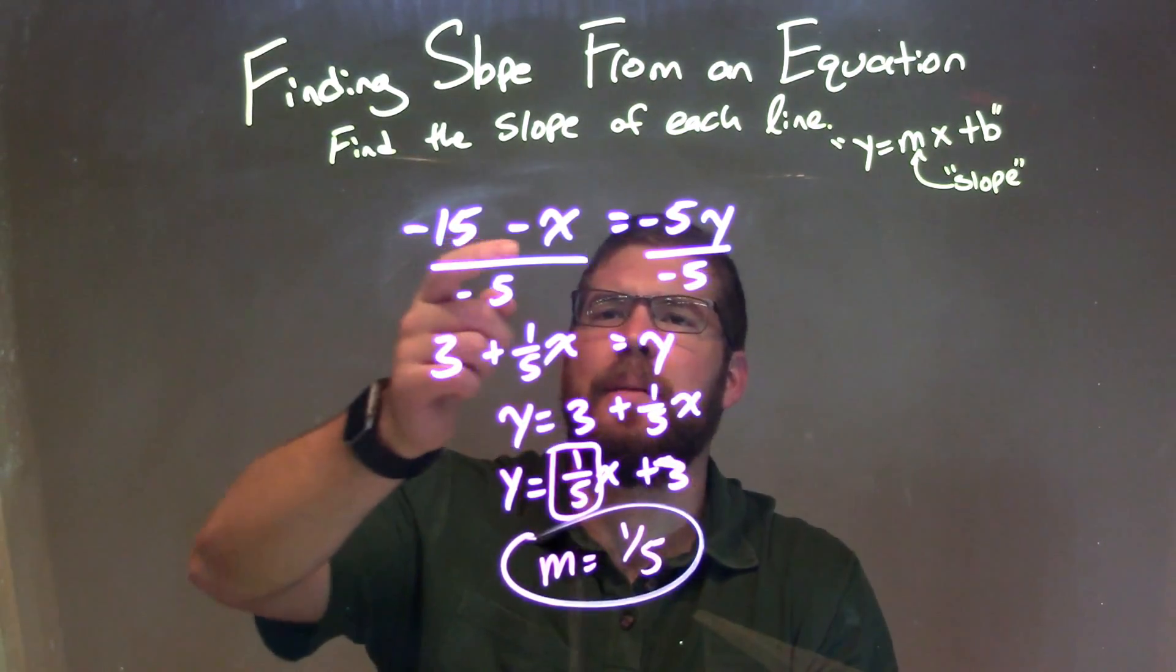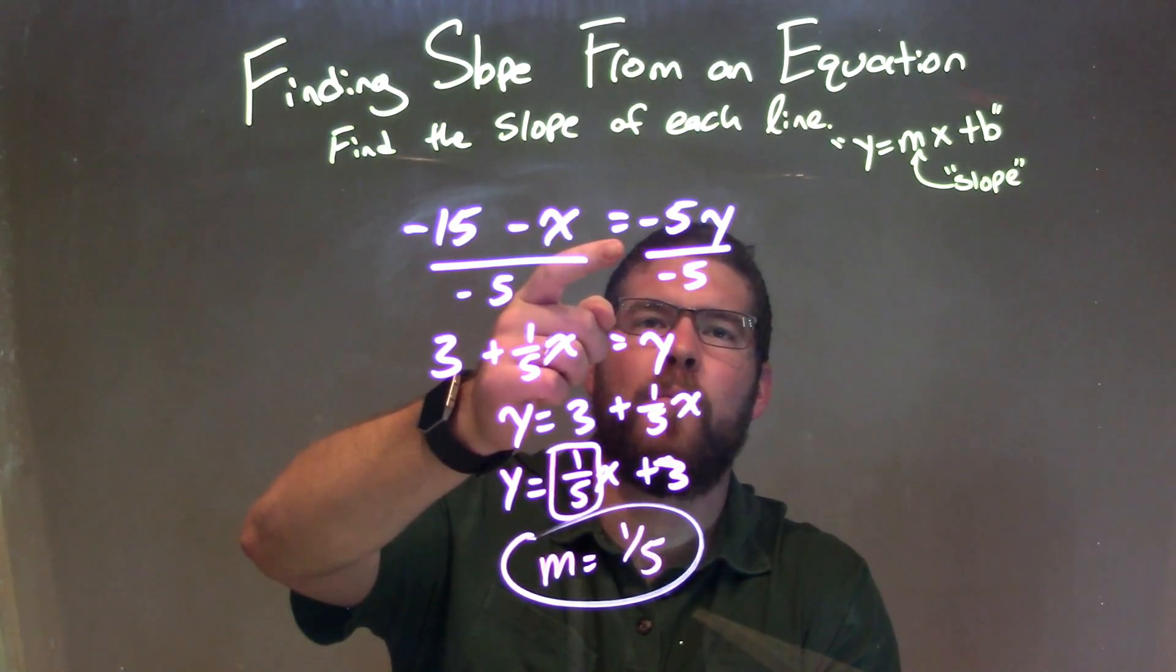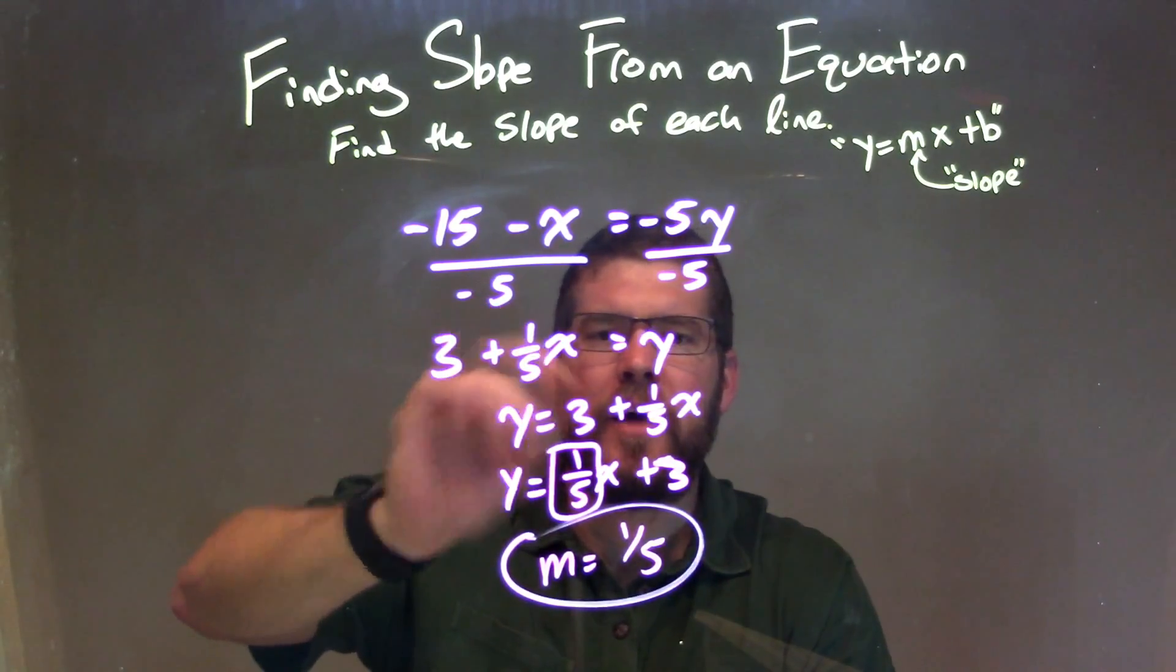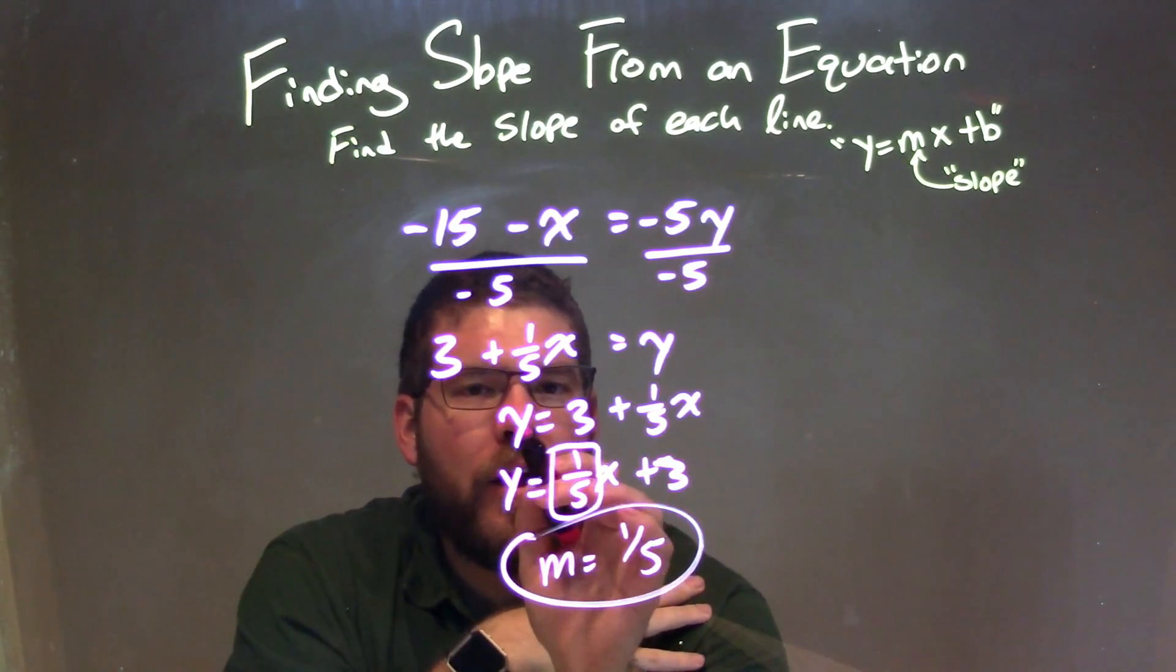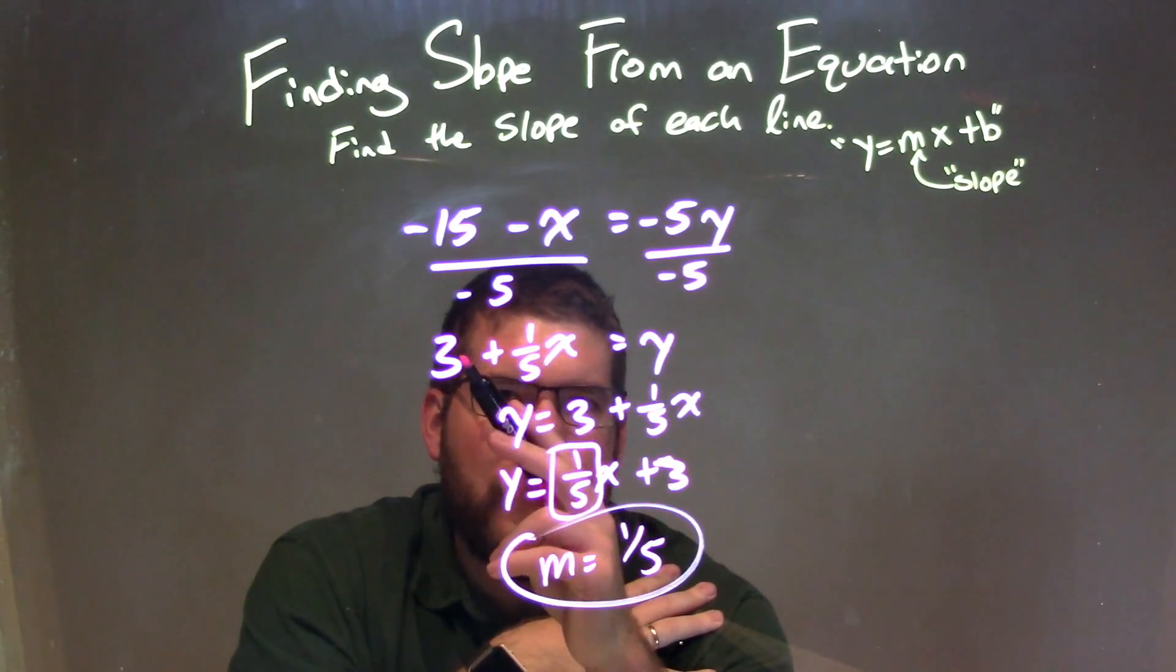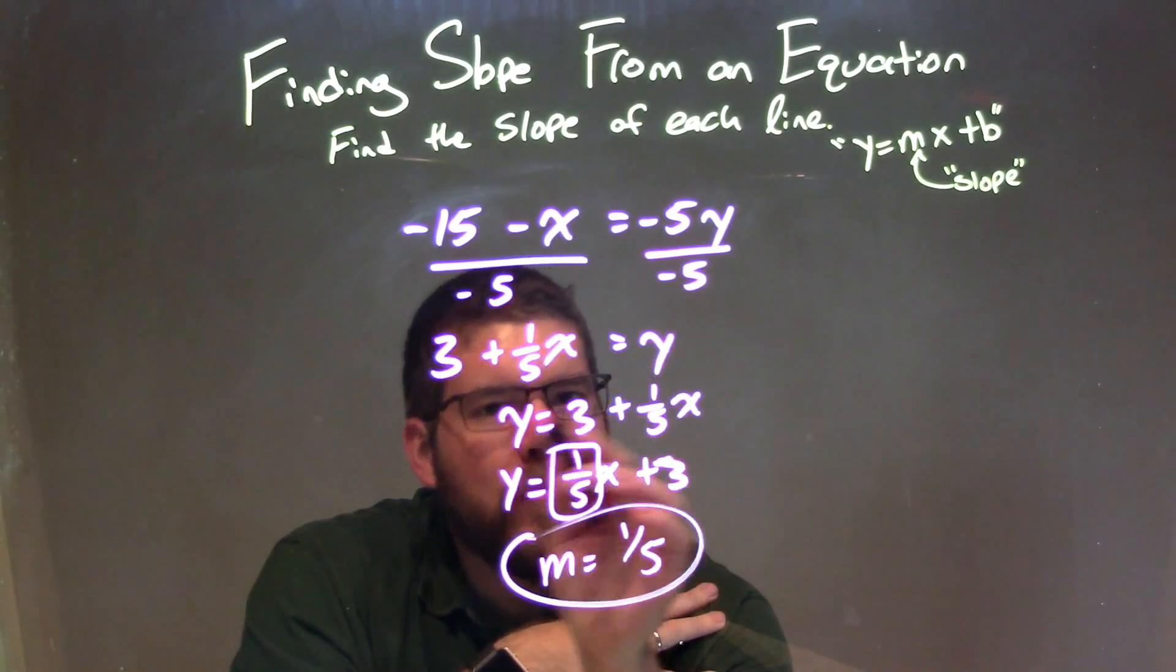So let's recap. We're given negative 15 minus x equals negative 5y. Divided both sides by negative 5, then rearranged to have y written first. So after dividing and distributing, I rearranged it to: y equals 3 plus one-fifth x.